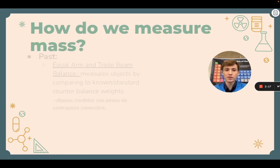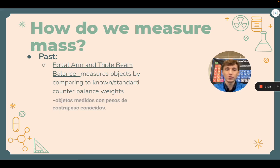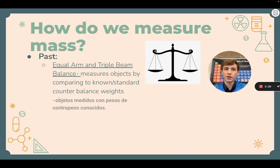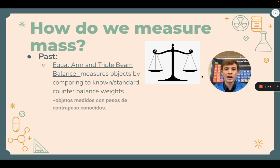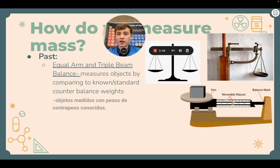So how do we measure mass? In the past we typically used an equal arm balance, where the object you are measuring is compared with known counterweights. You add counterweights until the equal arm balance is balanced, then add up the amount of weights added to one side — that gives you the mass of your object on the other side. This is done similarly with the triple beam balance, although instead of multiple weights you have a set of three movable masses that you slide left and right to balance your scale. You'll have an opportunity to work with some of these.